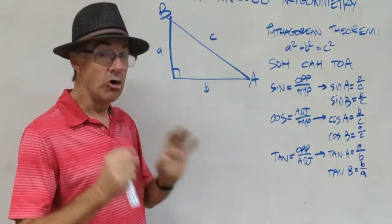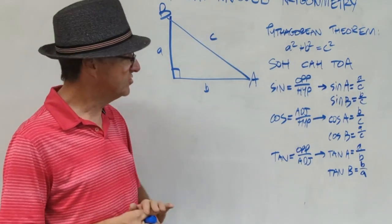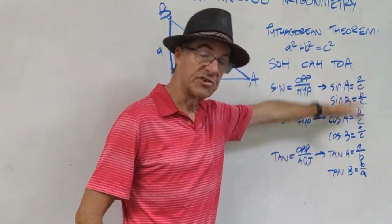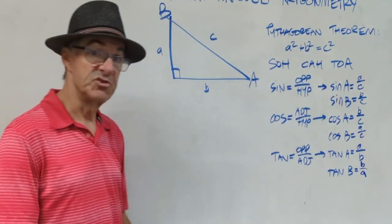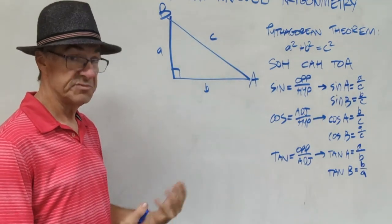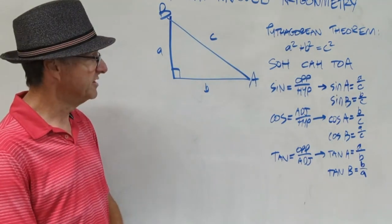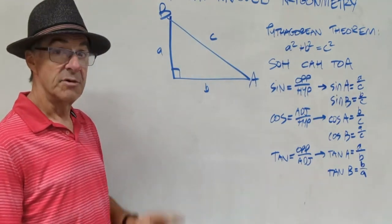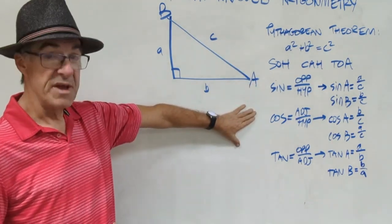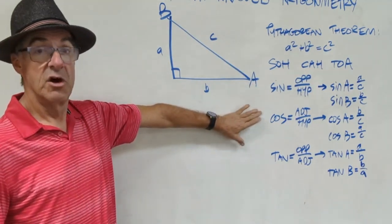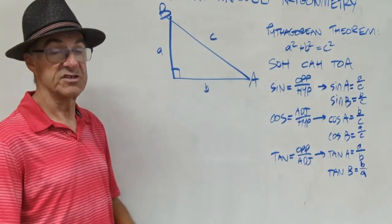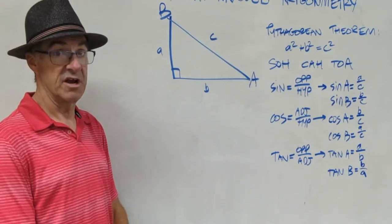There's a whole lot more we can do with this. You might be noticing some commonalities or relationships between the ratios — we'll exploit that later in this class. But right now, you just need to know that these are the basic ratios for trigonometry, and we're going to manipulate those to solve for some things in right triangles.